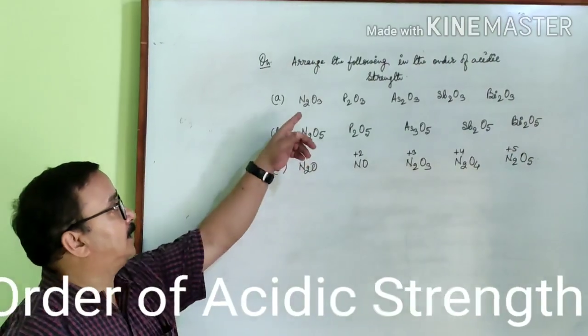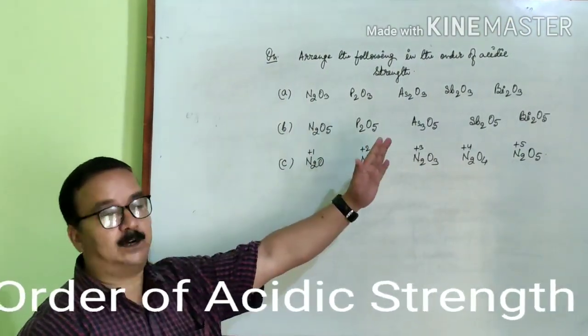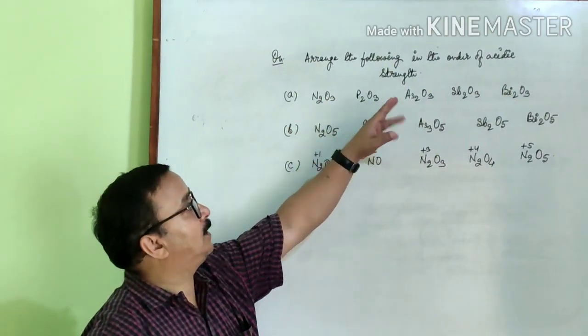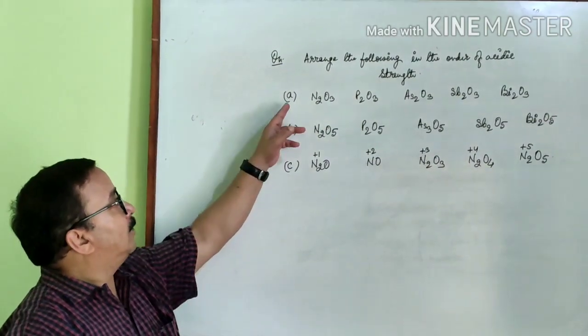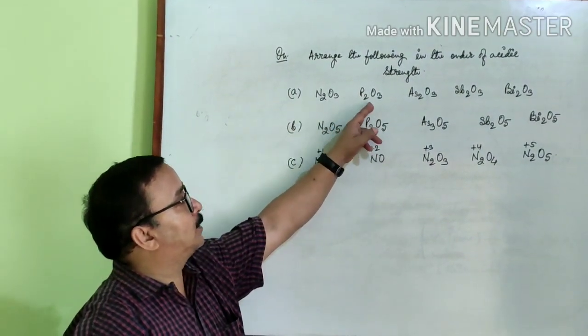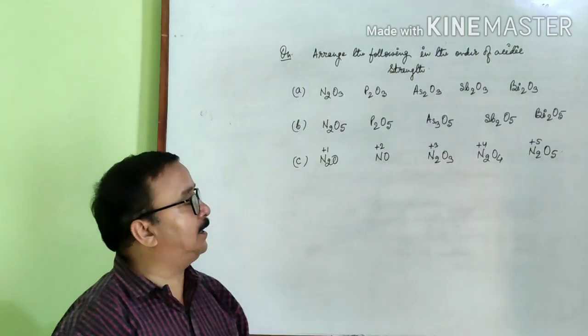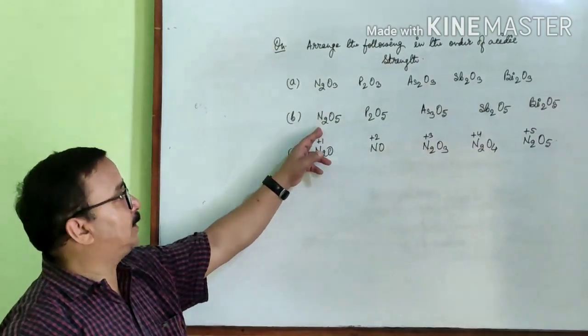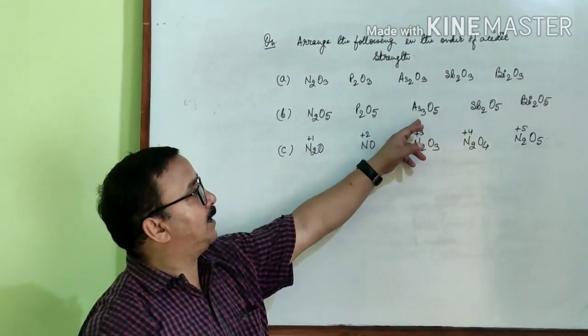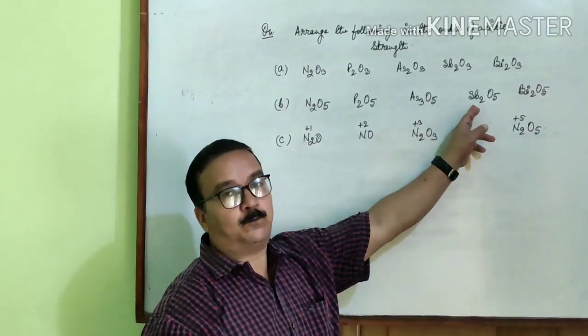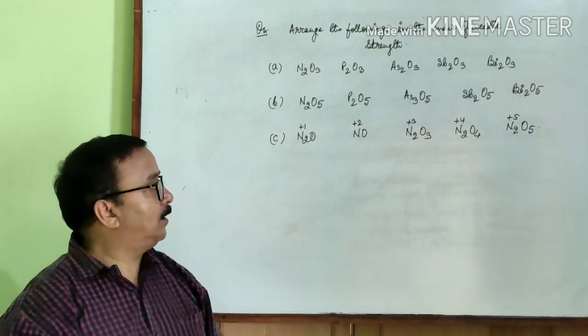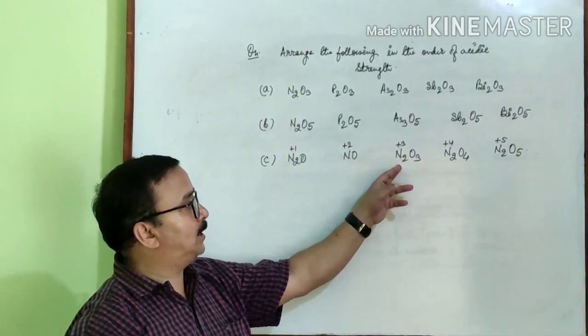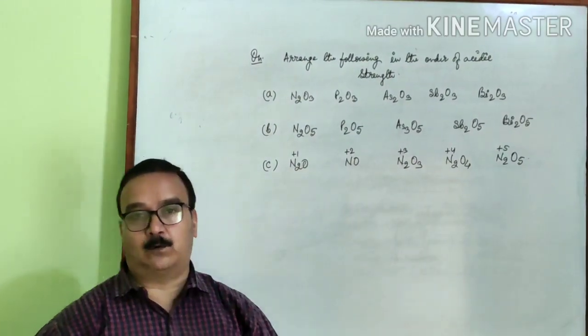Now we can arrange the following in the order of acidic strength. First is N2O3, P2O3, As2O3, Sb2O3 and Bi2O3. Second one is N2O5, P2O5, As2O5, Sb2O5 and Bi2O5. And number C is N2O, NO, N2O3, N2O4 and N2O5. So in which way do we arrange them on the basis of acidic strength?